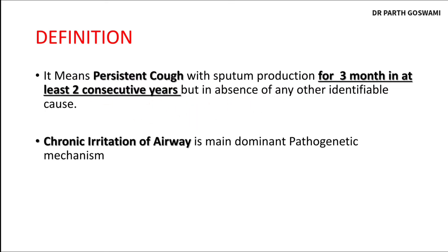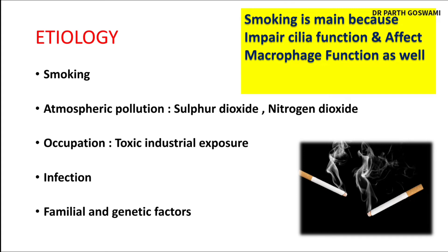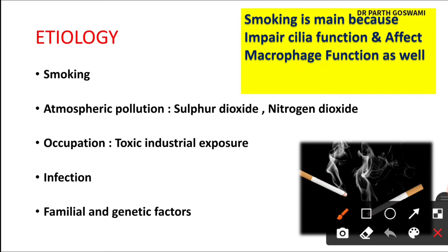The main pathogenetic mechanism for chronic inflammation of bronchi is chronic irritation to the airway - in the form of infection, smoking, industrial exposure, etc. The main etiology for chronic bronchitis is irritation to the respiratory tract, and this irritation is mainly caused by smoking. Smoking is a major etiological factor for chronic bronchitis.